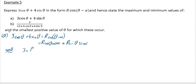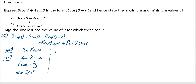Equating coefficients of cos θ: 3 = r·cos α. Equating coefficients of sin θ: 4 = r·sin α. So tan α = 4/3, giving α = 53.1°. Also r = √(3² + 4²) = √25 = 5, which you should know from the Pythagorean triple 3-4-5. Therefore the whole expression is 5·cos(θ - 53.1°).